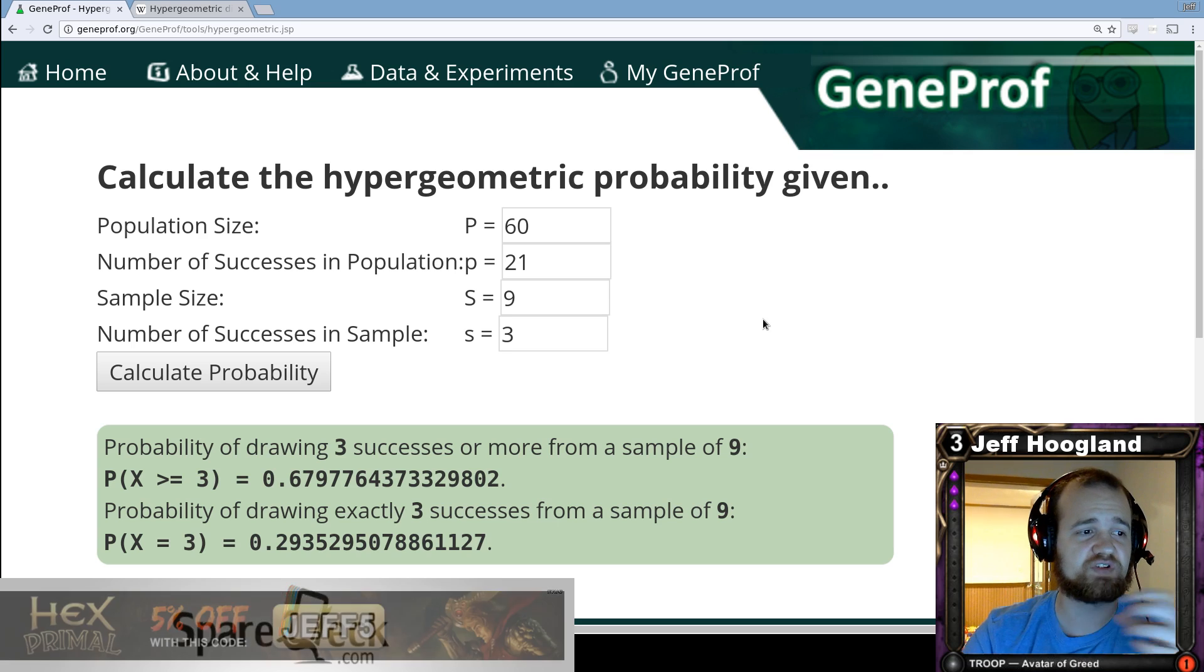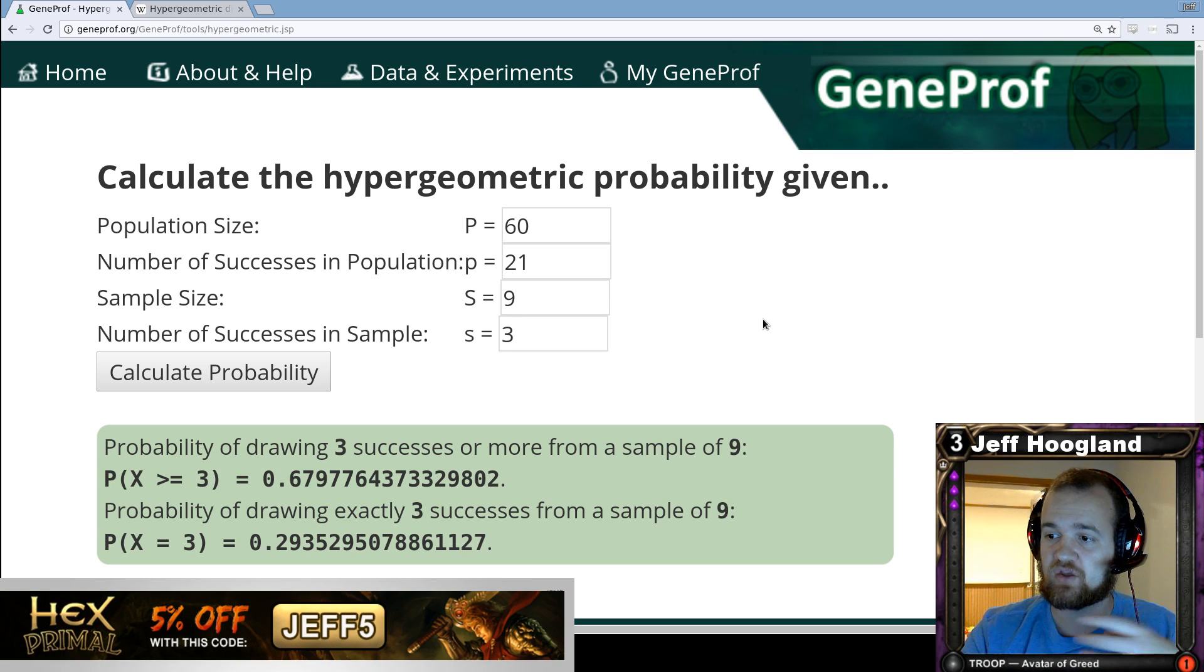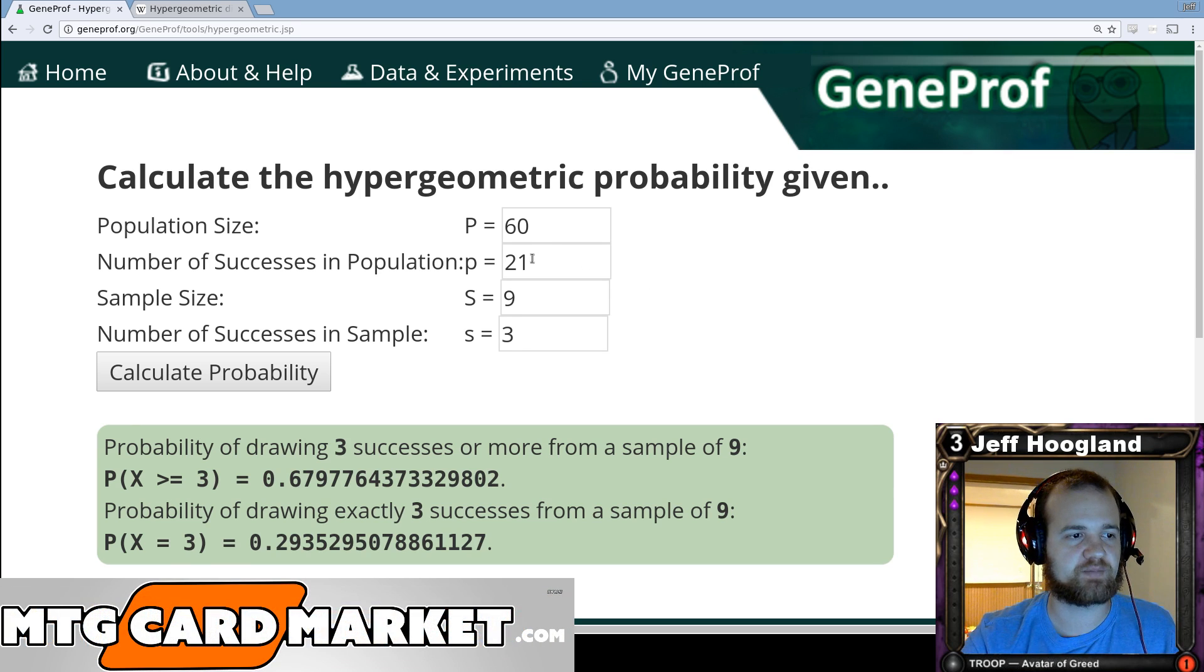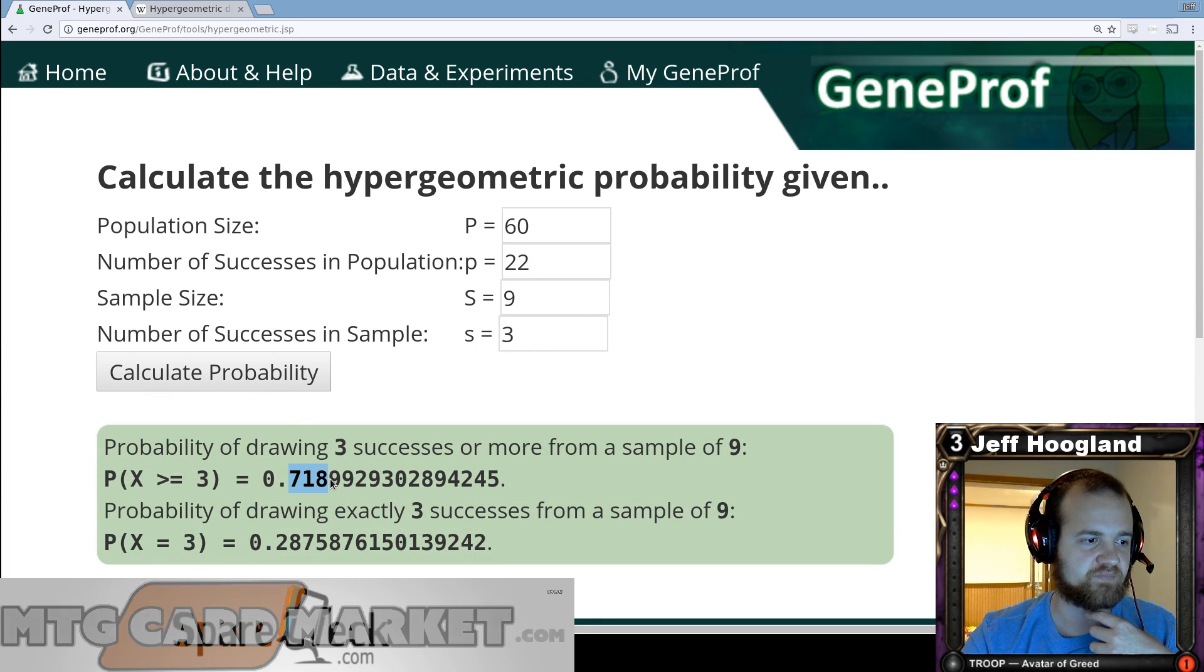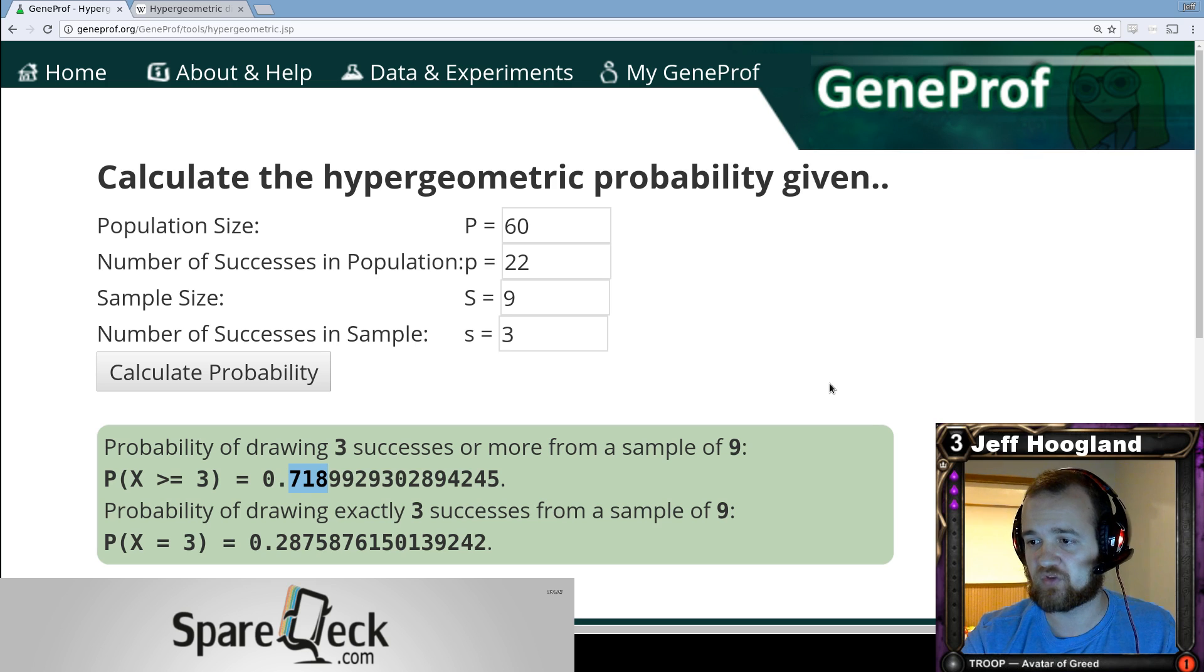Now you can see how adding more or taking away those resources affects the probability of being able to play your cards consistently. So, for example, if I added a 22nd blood source to my resource base and calculate, you can see I gain 4% more likely to be able to play a triple blood card on turn three.